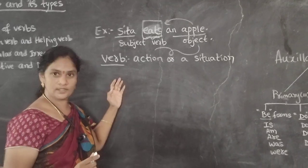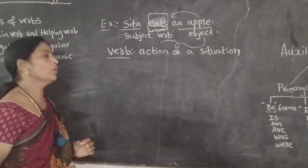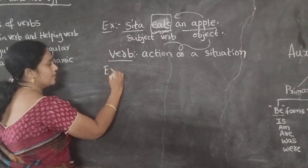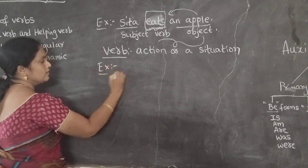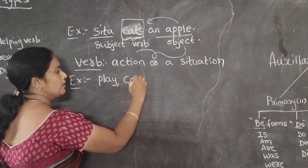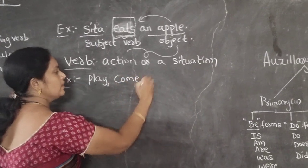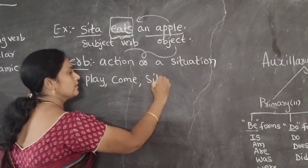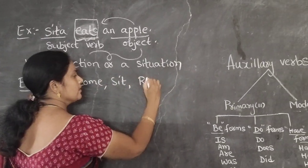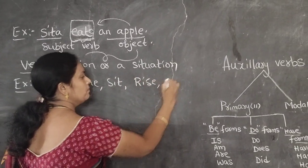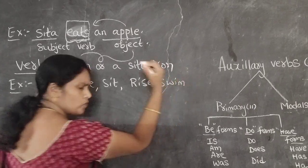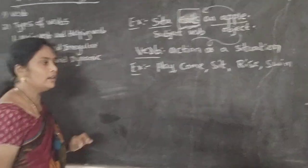Did you understand children? What is a verb? Now we take some examples: play, come, sit, rise, swim, fly. We have so many examples.